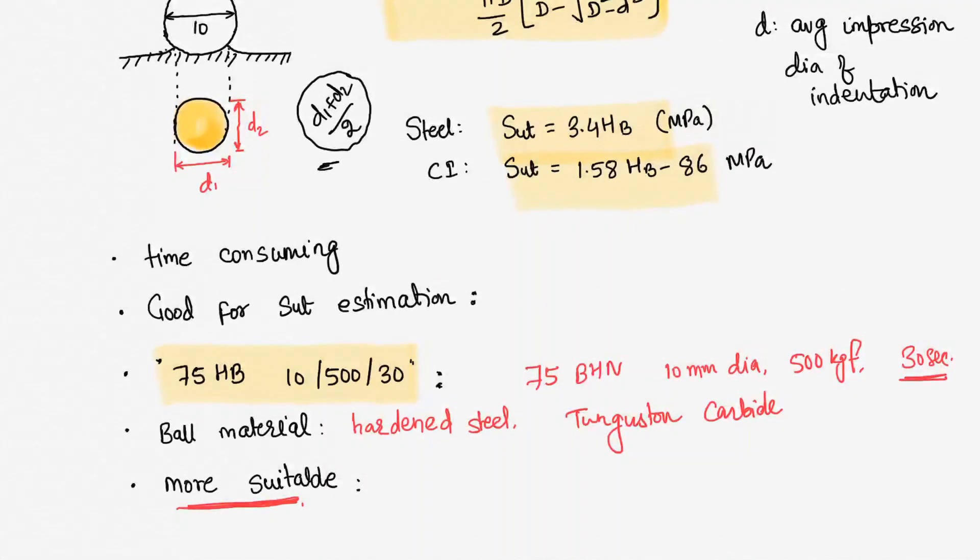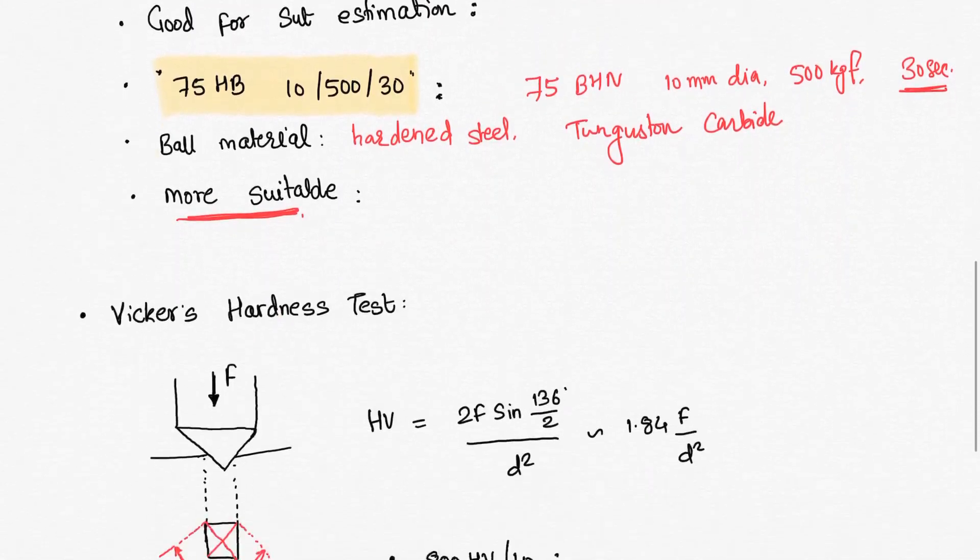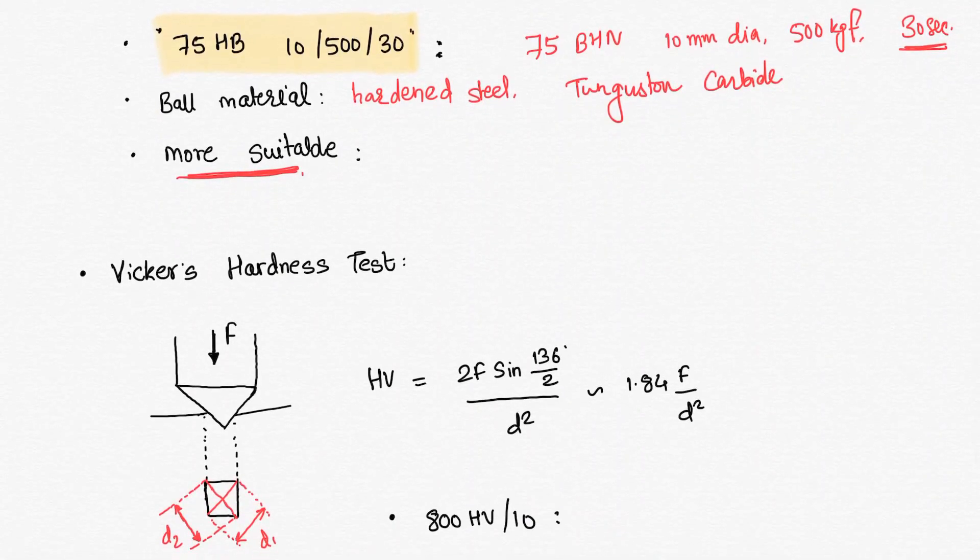Then there is one more test that is used, that is Vickers hardness test. What happens in Vickers test? Again, the indentation type is only changing. Here we use a pyramid type of indenter. This is a pyramid type of diamond indenter.